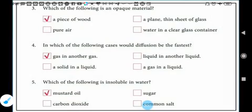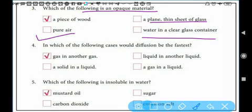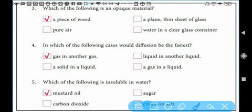Next: which of the following is an opaque material? Opaque material is material through which light does not pass. Plain sheet allows light, water in clear glass container allows light, air allows light. So students, your right answer is a piece of wood, because light does not pass through wood.